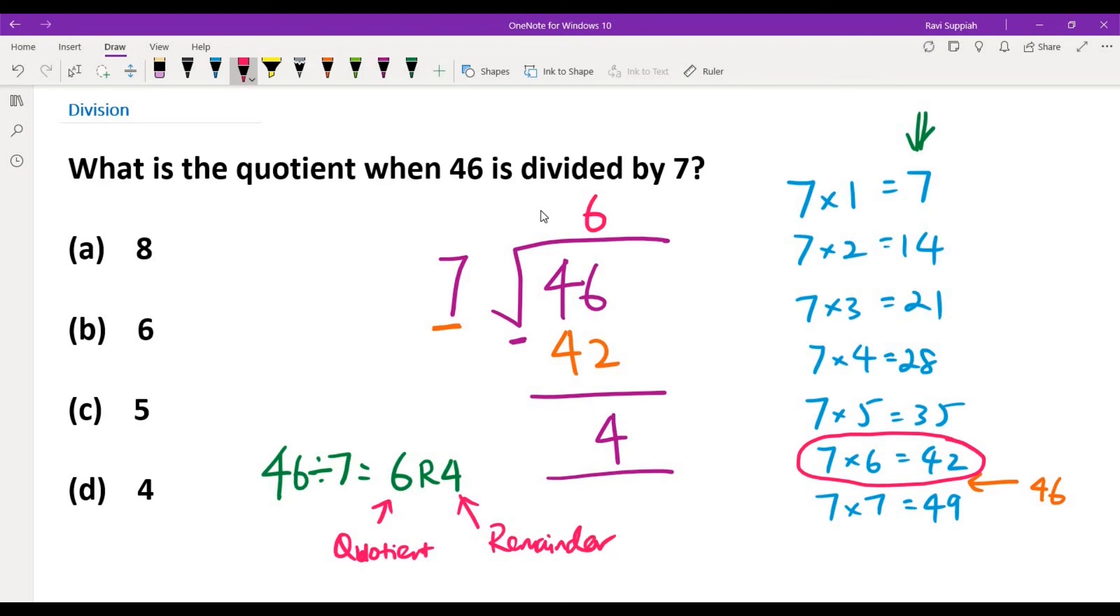The question is asking what is the quotient when 46 is divided by 7, so the answer is 6. For these four multiple choices here, we can say that the answer is B, 6. Thank you for watching, and I hope now you understand how to do such a question. Bye.